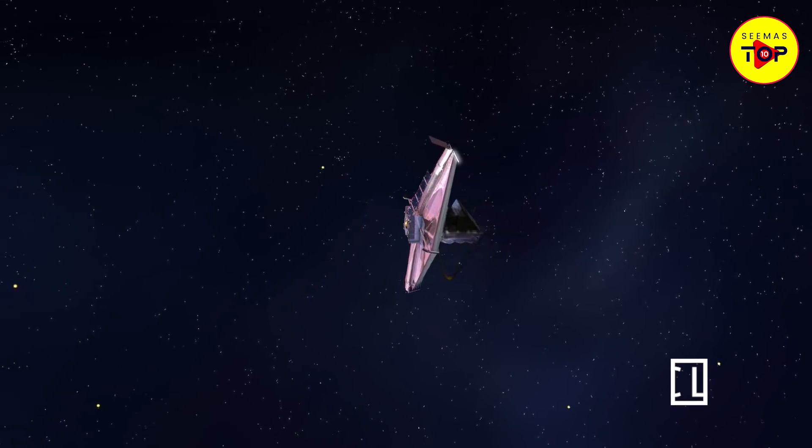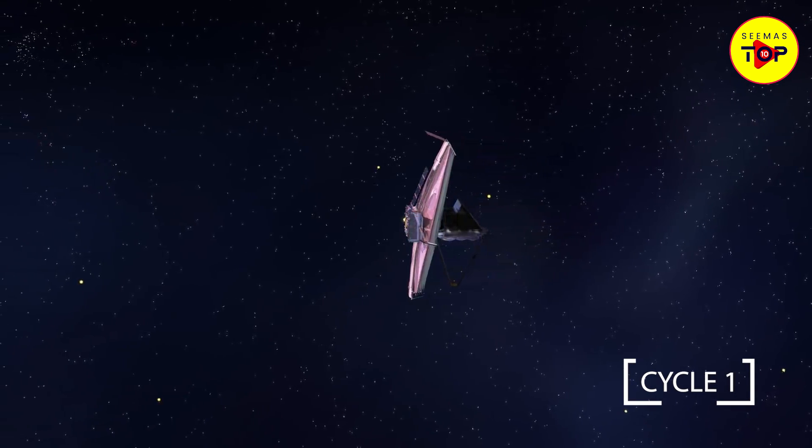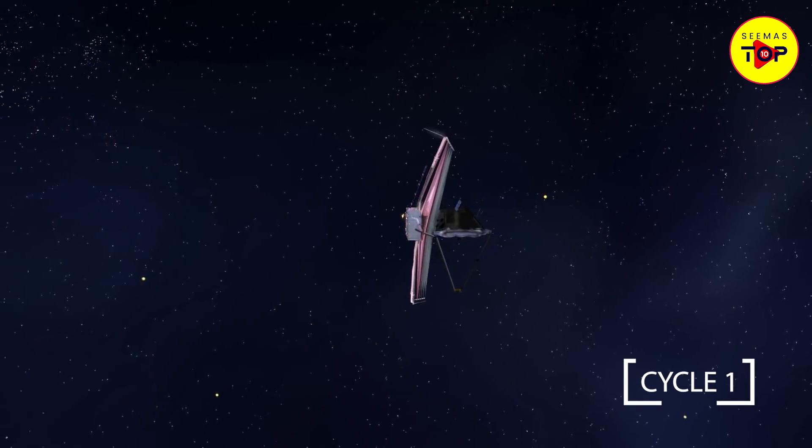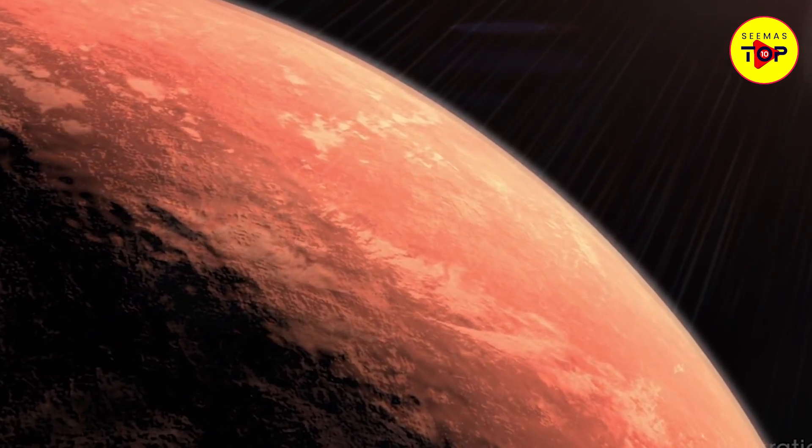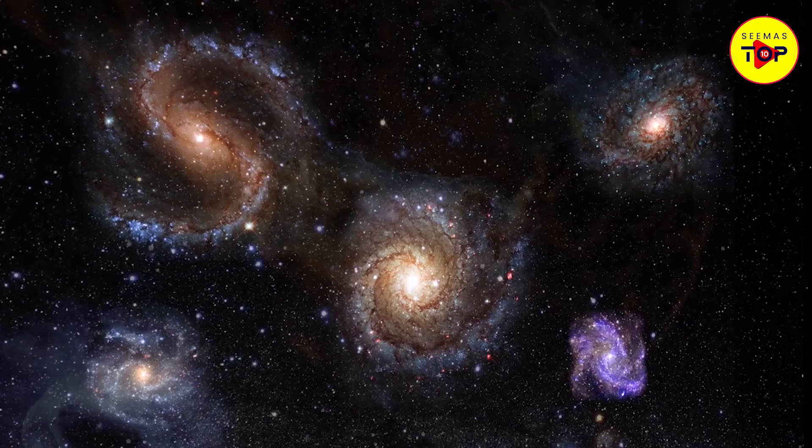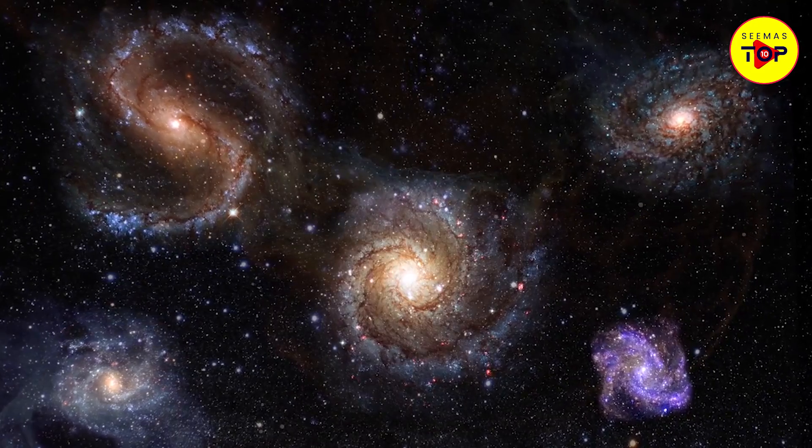Cycle one after six months will be when the first observations from the telescope begin. During cycle one, observations will include looking for atmospheres on exoplanets and understanding the earliest galaxies of our universe.